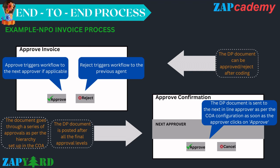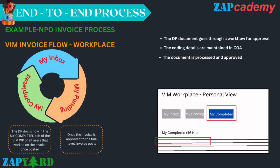Once the document goes through the series of approvals as per the hierarchy maintained in the COA, the DP document gets posted. If any rejection happens at any stage, the non-PO approval workflow gets terminated and must restart from scratch. Until and unless the approval workflow is fully completed, the DP document cannot be posted. Once the invoice is acted upon by all approvers across all levels of the approval flow, it moves to My Completed in the WIM workplace. The DP document goes through the workflow for approval, all coding details are maintained in COA, and finally the document is processed and approved.